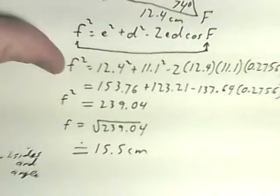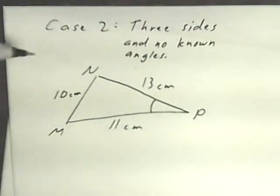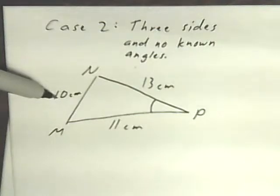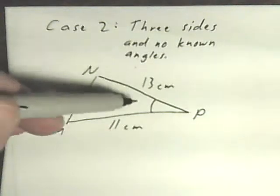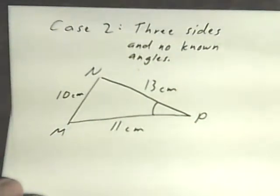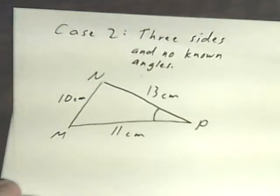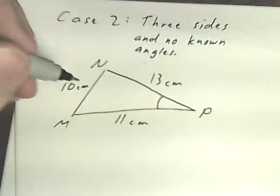Let's do case number two, three sides with no angle. So here I have a triangle that has one side 10 centimeters, one side 11 centimeters, one side 13 centimeters, and I would like to find angle P. So I'm going to use the other form of the cosine law.